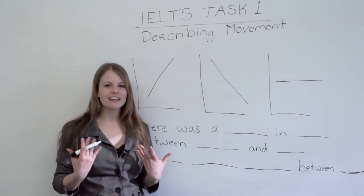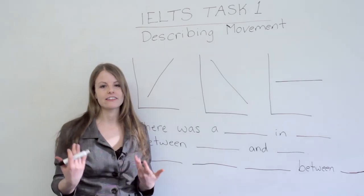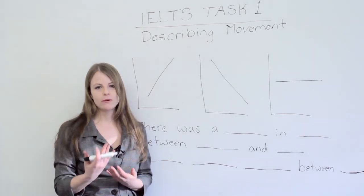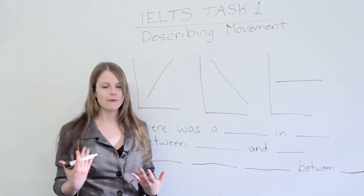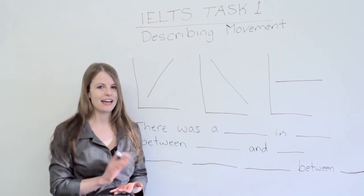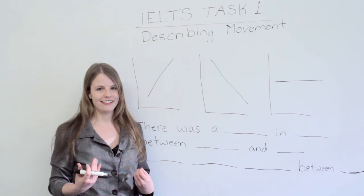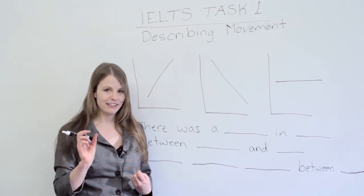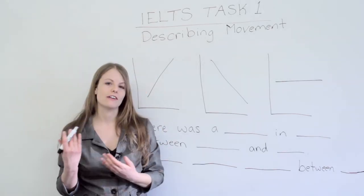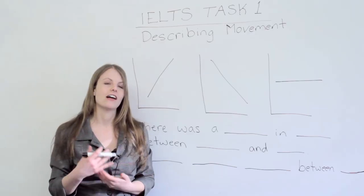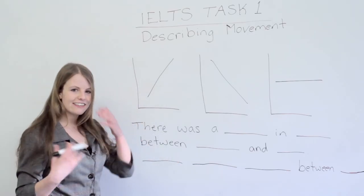So we've talked about what your first sentence for this task can be. The way I showed you is a great formula that's easy to remember and will really help you with vocabulary marks and coherence. Now we're going to focus on some key vocabulary you can use when describing the movement of a bar graph or a line graph.